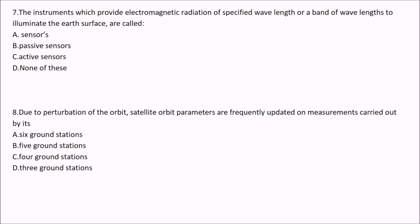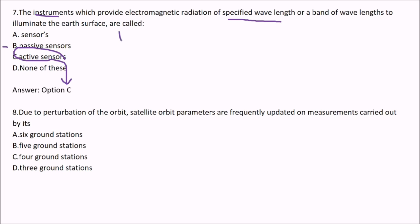Next: the instrument which provides electromagnetic radiation of a specified wavelength or a band of wavelengths to illuminate the earth's surface is called what? This is an instrument — not a natural or celestial object. Is it a sensor, passive sensor, or active sensor? The answer is C — active sensor — because it sends electromagnetic radiation and then receives it as well.